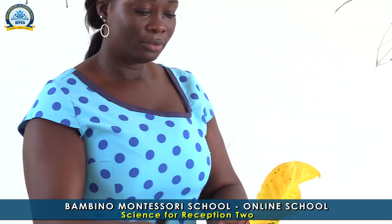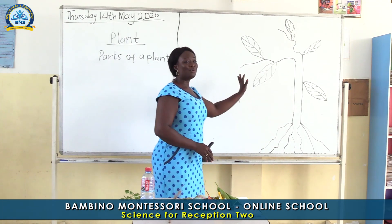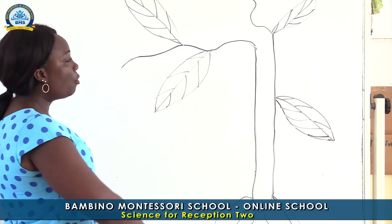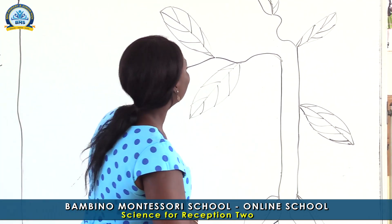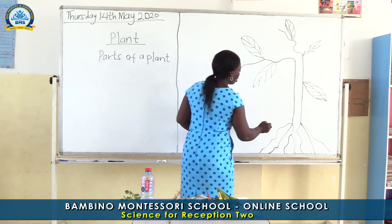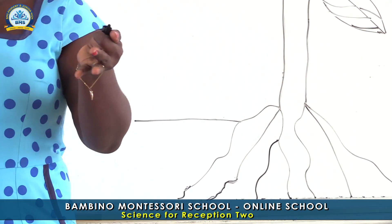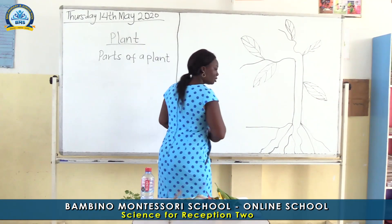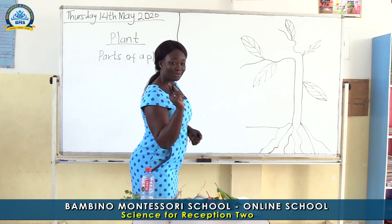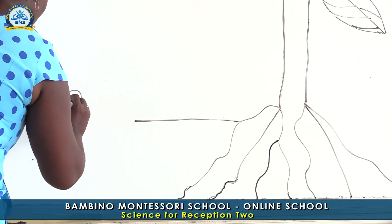Now I want you to look on the board. I have a very beautiful plant on the board. We are going to name the parts of the plant. I told you the down part of the plant is called — I want somebody to tell me. It's called roots! That's great. How do you spell roots? Use your sounds.